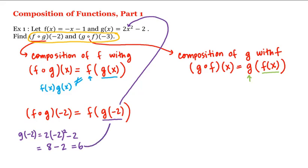We then plug that in and evaluate f at 6. This is equal to f of 6. Looking at our function f, we plug 6 in wherever we see an x: this is equal to negative 6 minus 1, or negative 7.